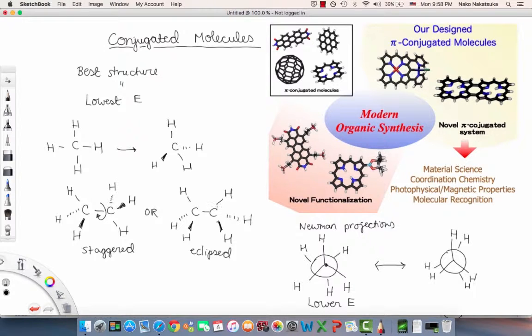The lowest energy for minimizing electron repulsion and maximizing p-orbital overlap is very important for conjugation. Two things we always want to consider are: the lower the energy, the more stable the structure, and we want conjugated molecules with maximum p-orbital overlap.